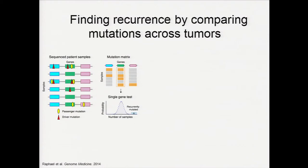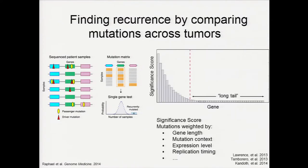One common strategy to solving this problem is to find recurrence in a large number of samples. The idea here is that if a mutated gene is found in more samples than you would expect, it'll be a good candidate for harboring the driver mutation.